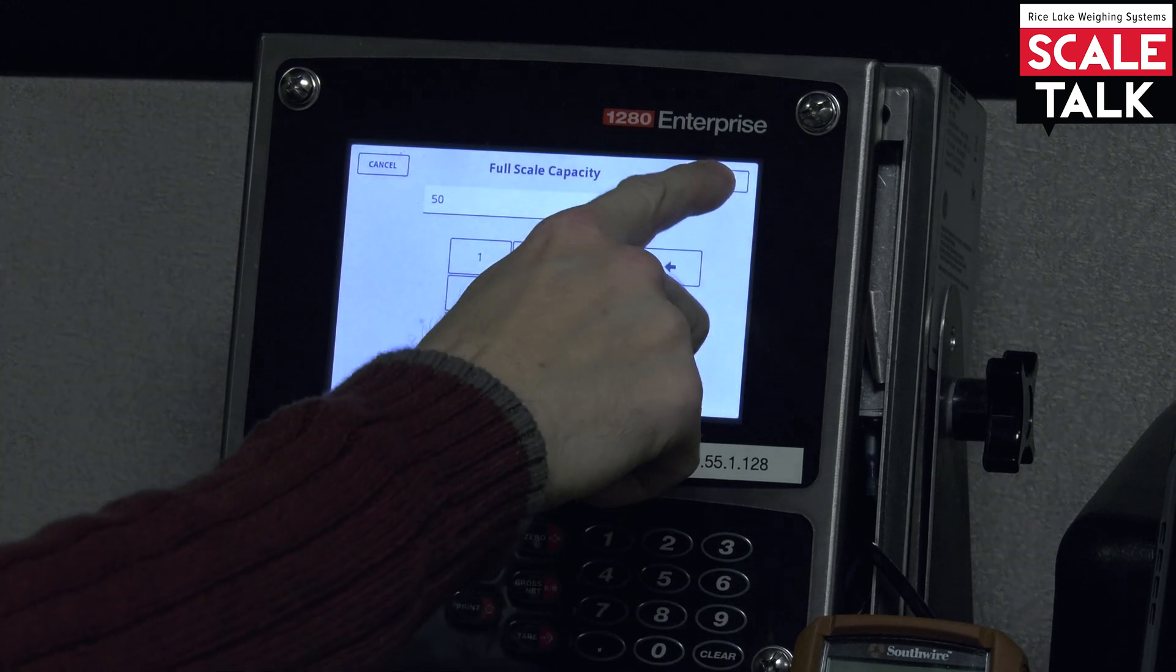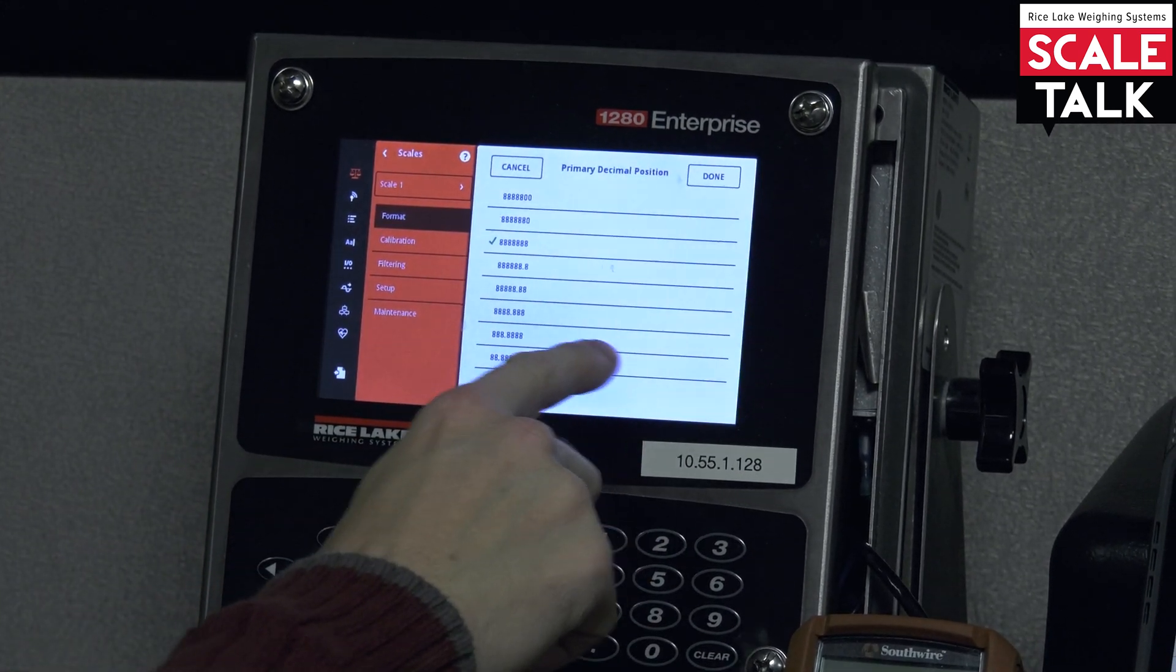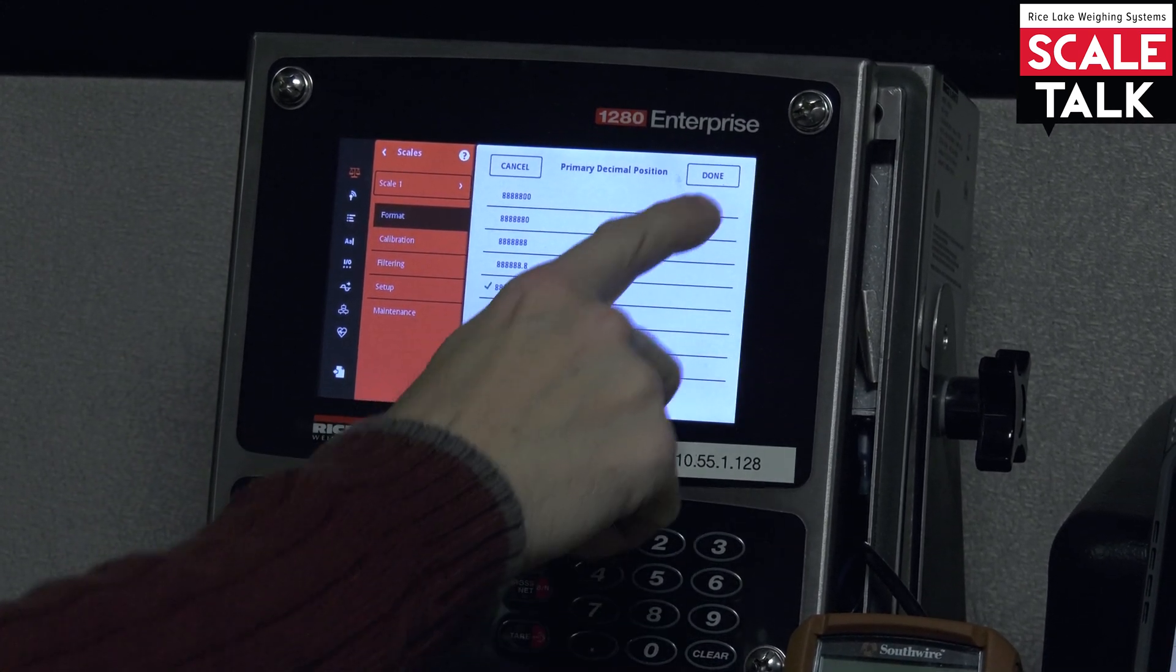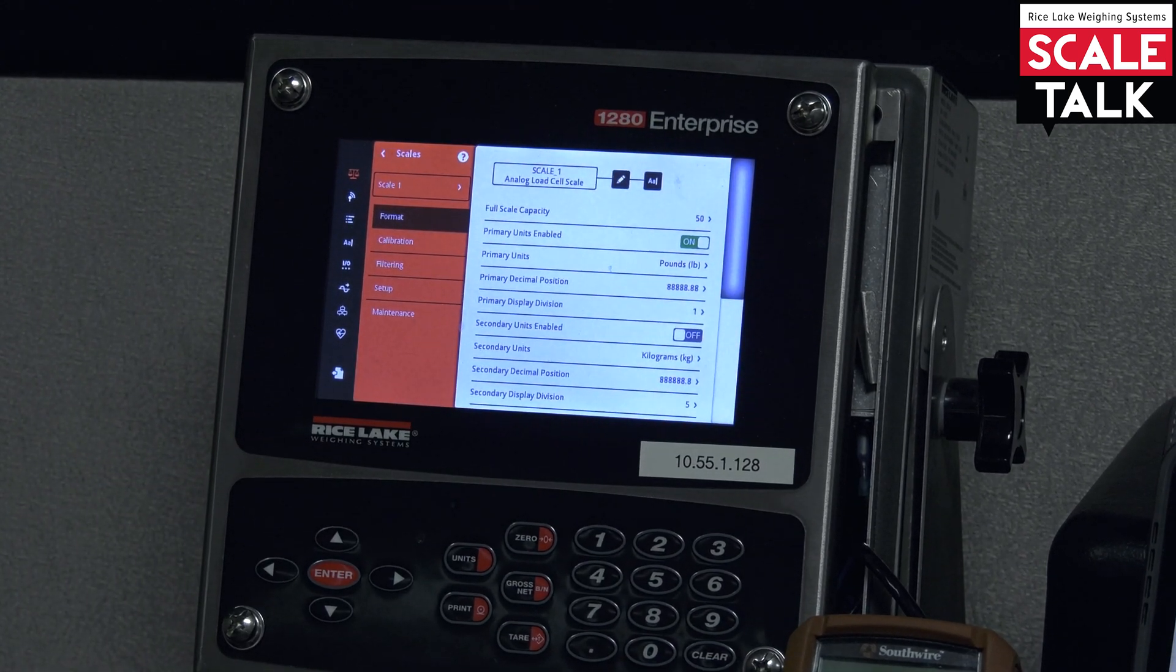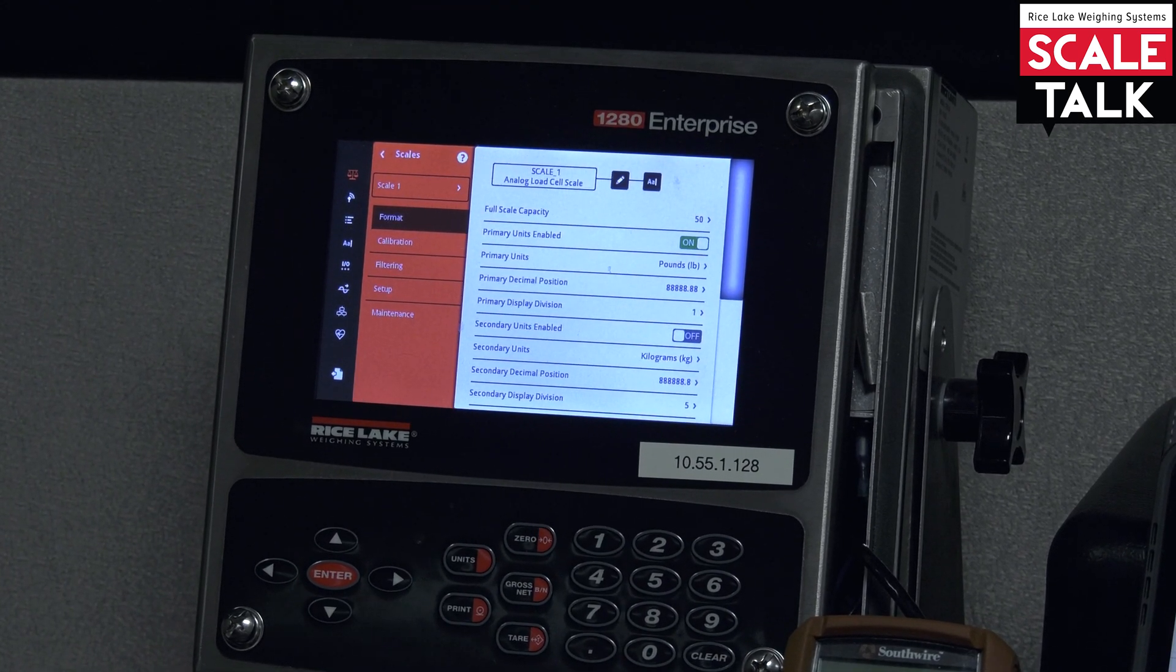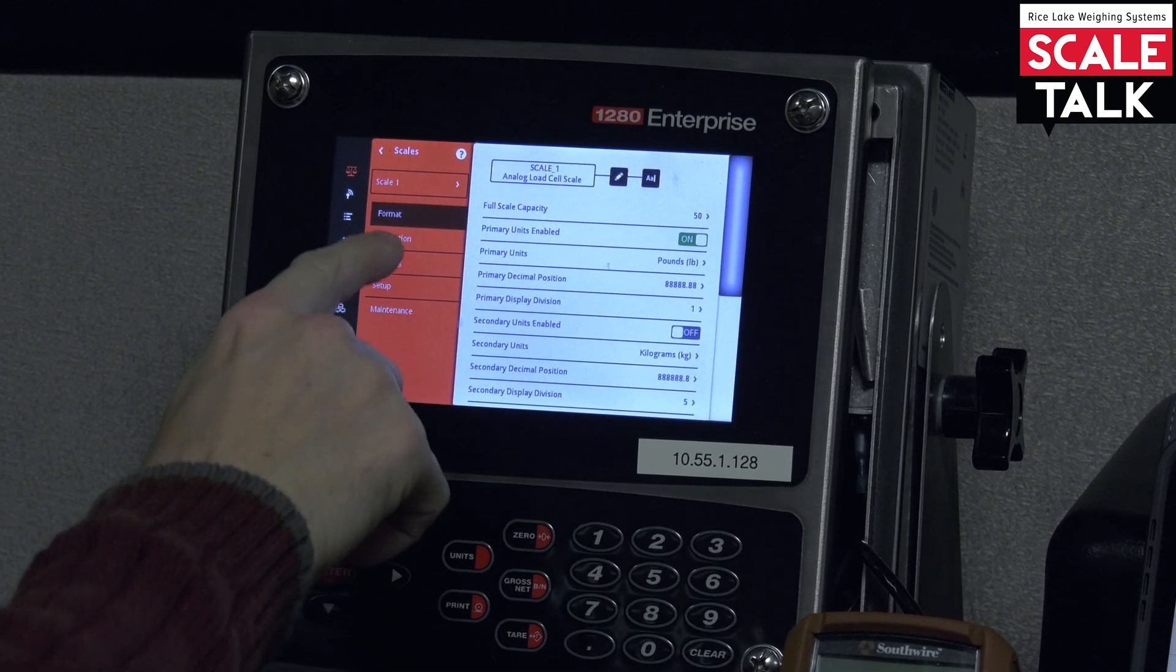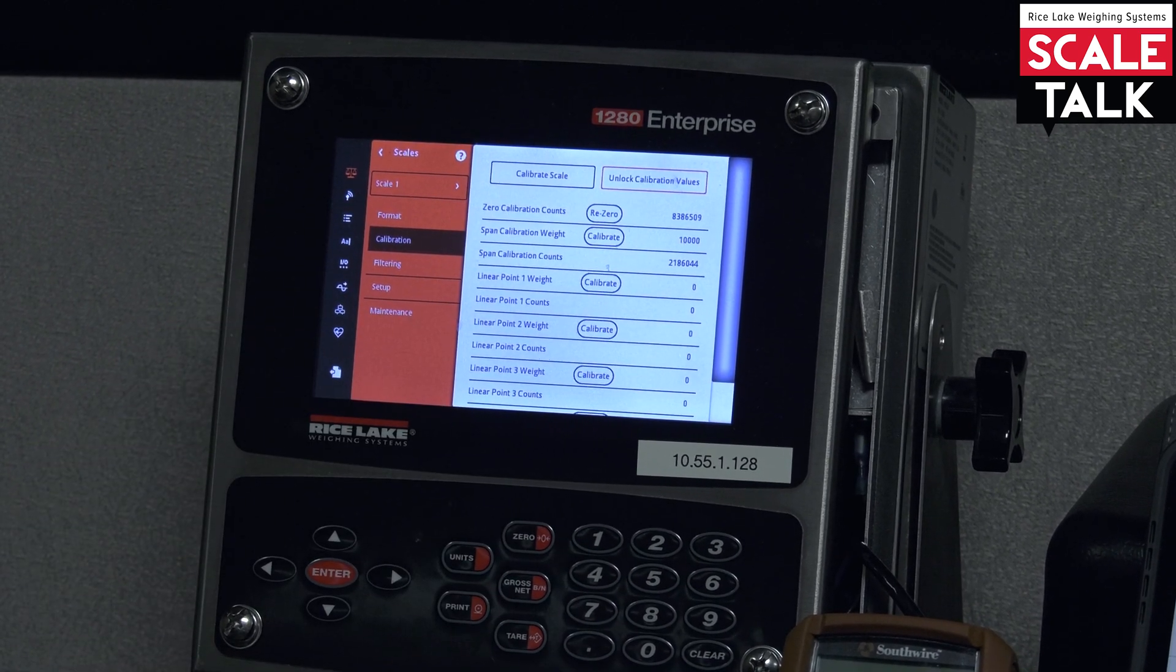I'm going to set it up to be 50 pounds and we're going to set it up to count by 0.01 of a pound. So at this point we have that much done. So we'll go on to the calibration portion.